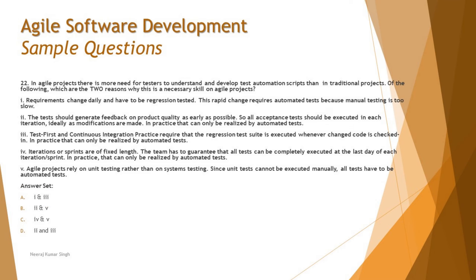Moving on to the last question, which is a bit lengthy. In an agile project, there is more need for testers to understand and develop test automation scripts than in traditional projects. Of the following, which are the two reasons why this is a necessary skill on agile projects? Statement one: requirements change daily and have to be regression tested; this rapid change requires automated tests because manual testing is too slow.